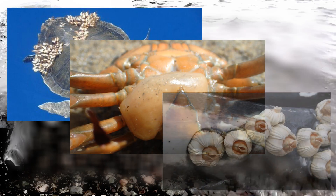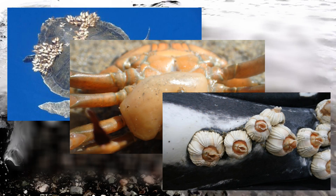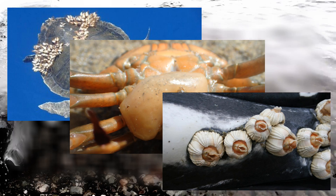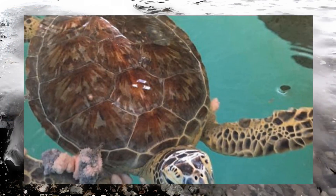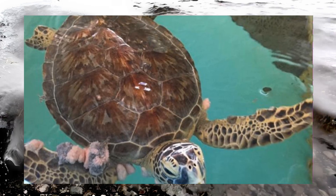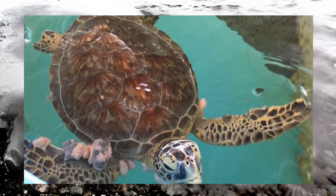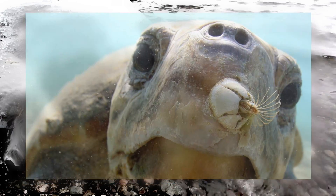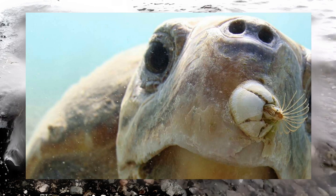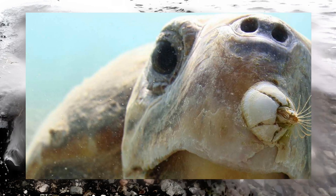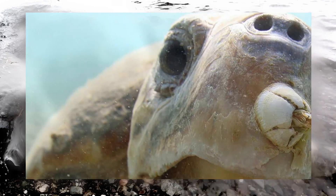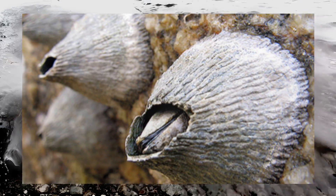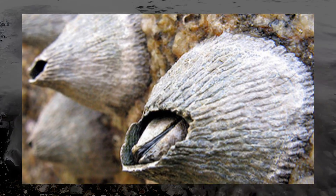Barnacles can also be found on whales. They can damage these sea creatures because they can cover and disable the flippers, and cover the eyes and nostrils to such an extent that it makes the creature unable to swim, see, smell, or even survive.